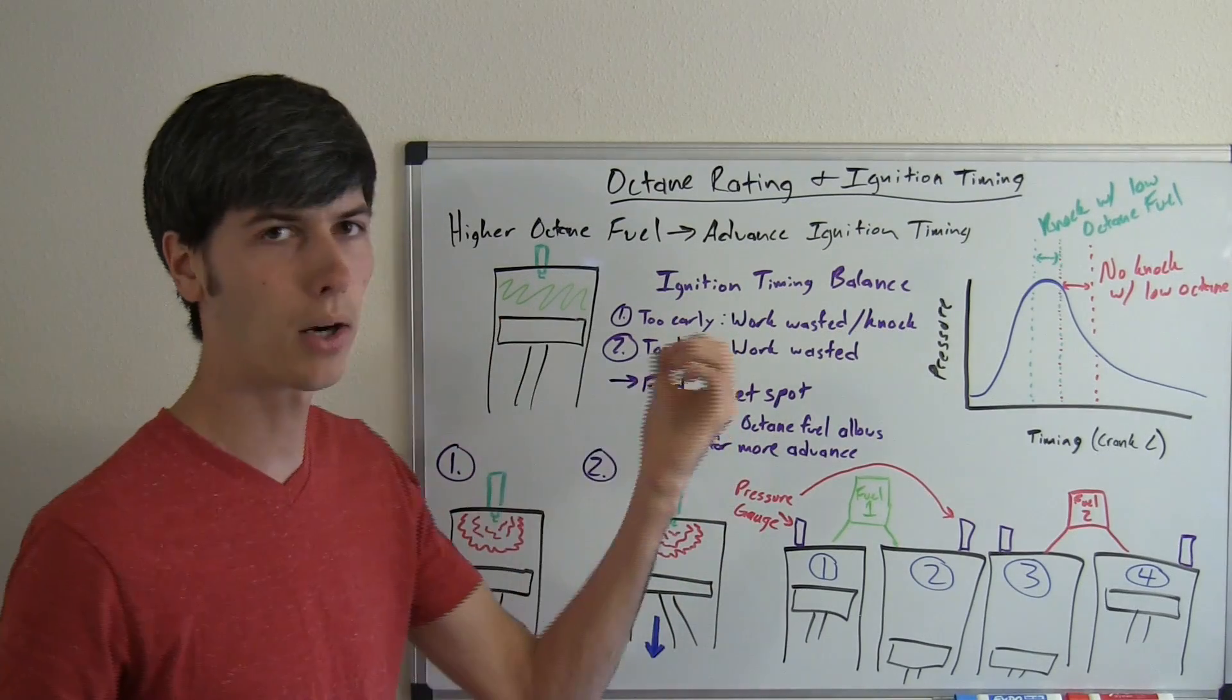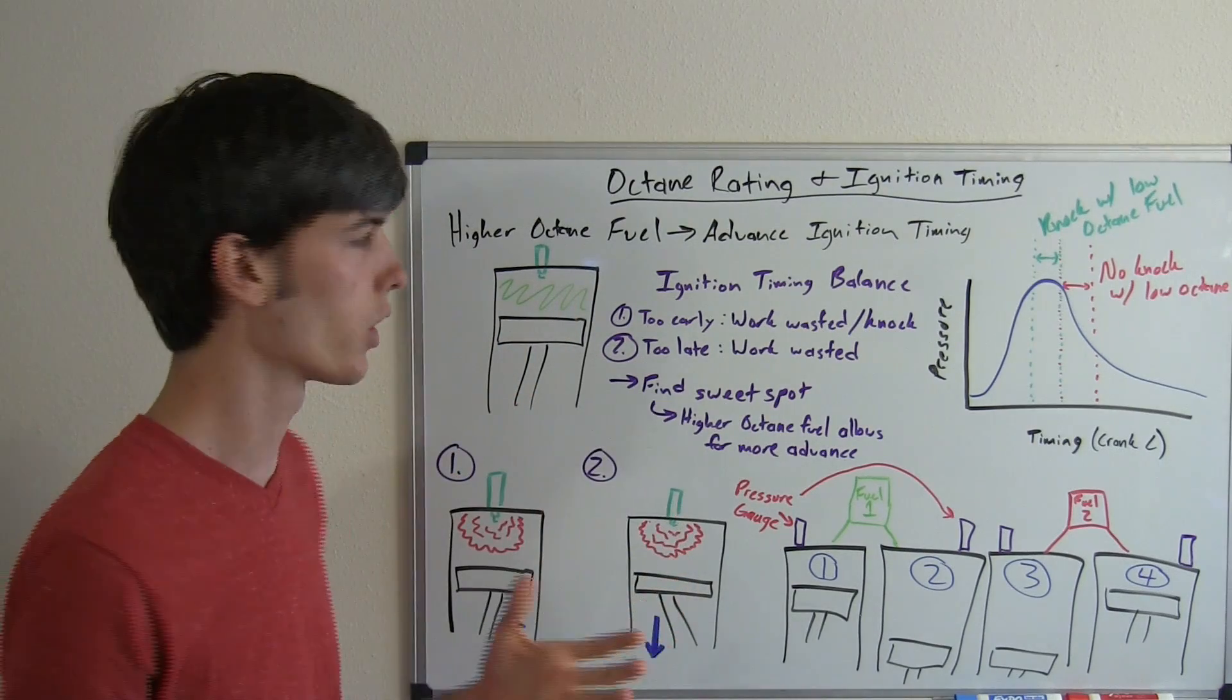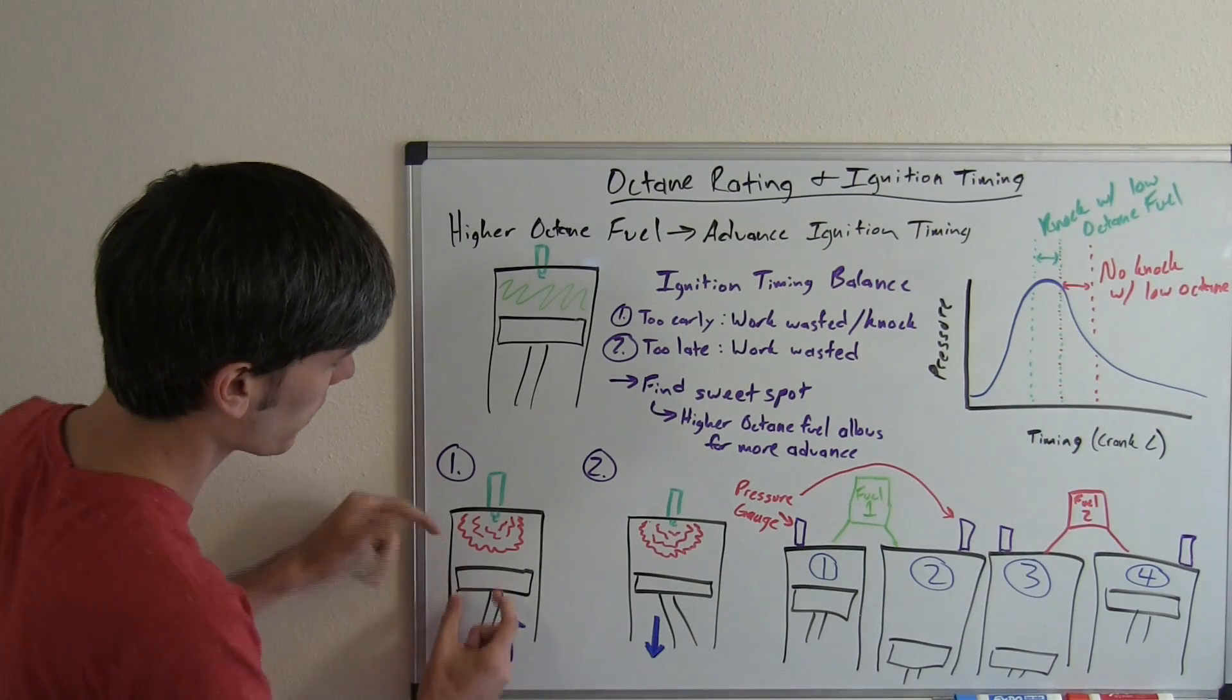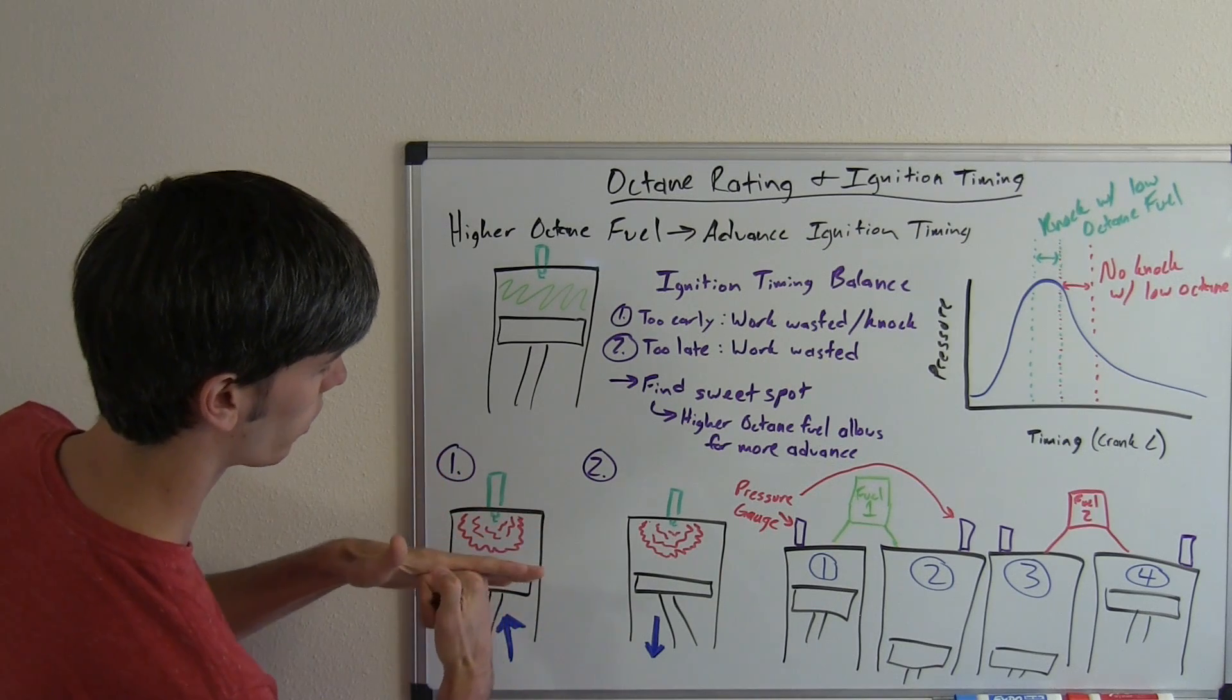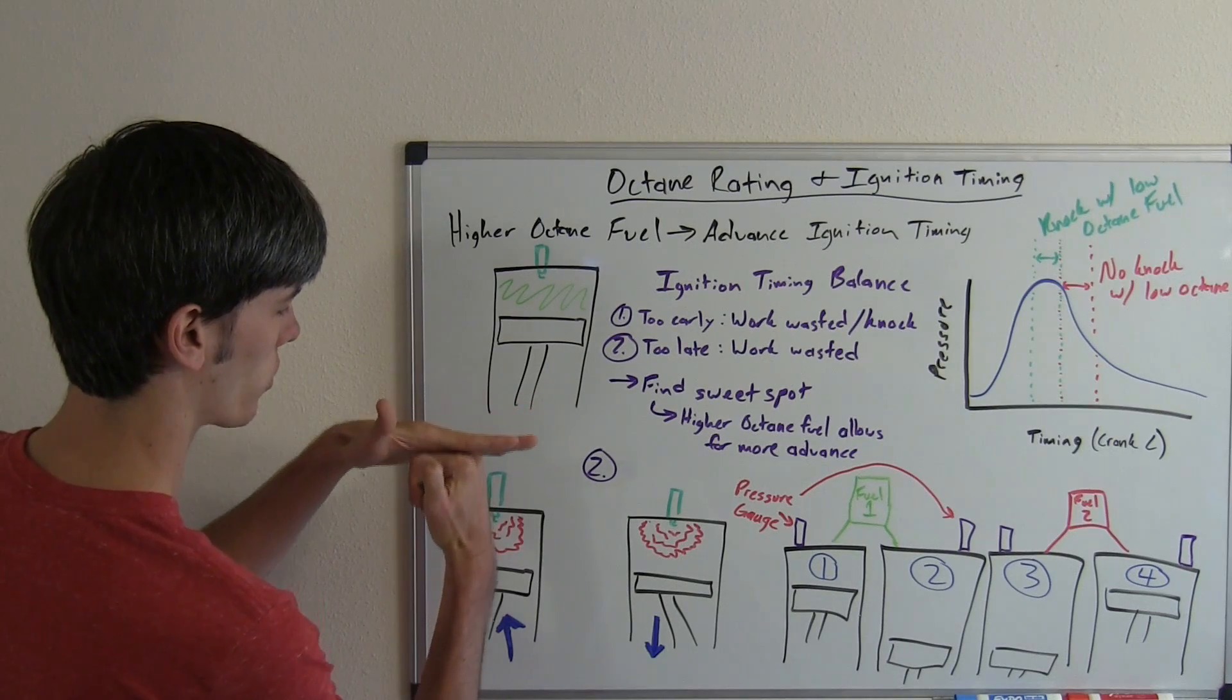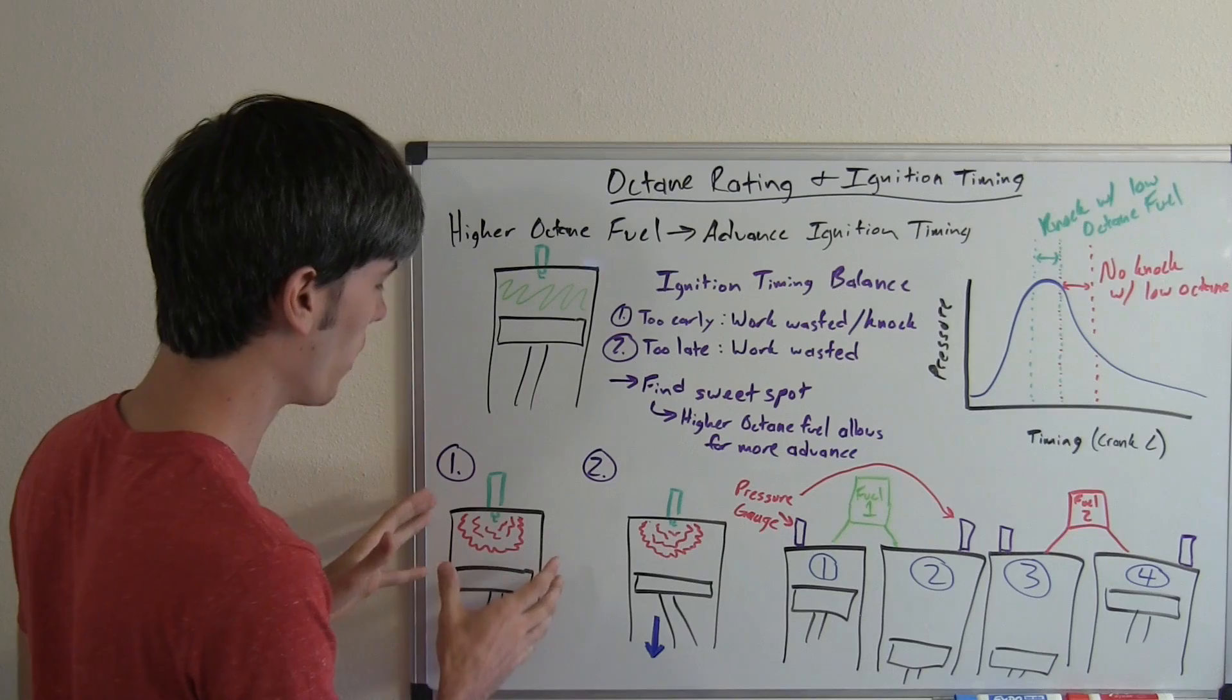If you spark your ignition to light the air fuel mixture within your cylinder too early, you're going to have wasted energy. So here we've got that example. You've got your piston coming up, you've ignited too early, so you have this flame front, you're burning the air fuel mixture, and you're pressing down on that piston as it's still on its way up before it even reaches the power stroke and starts to move down to provide useful work. So you don't want that to happen,